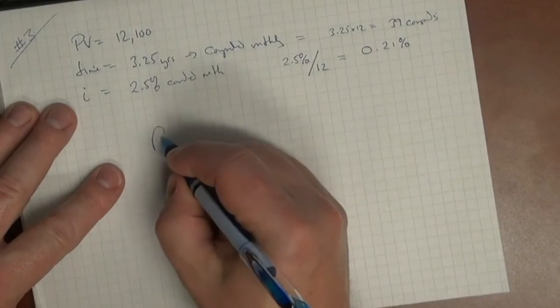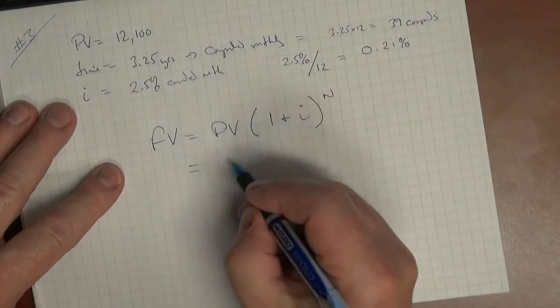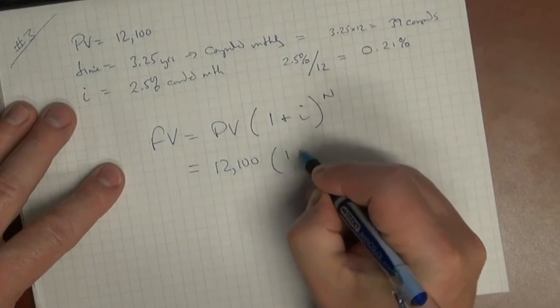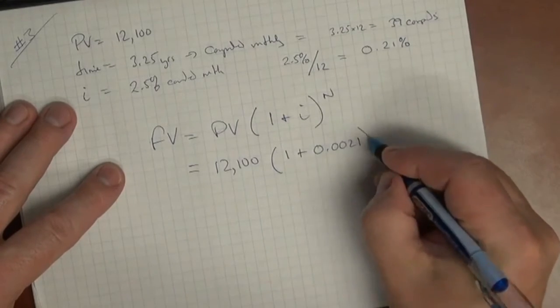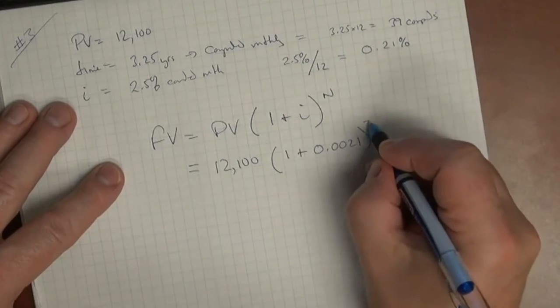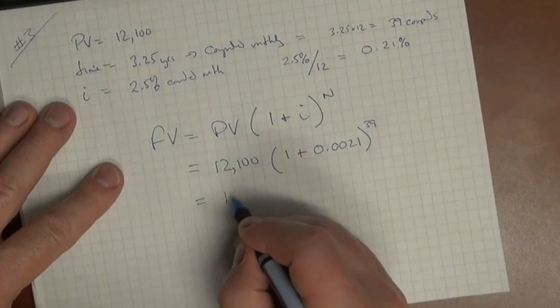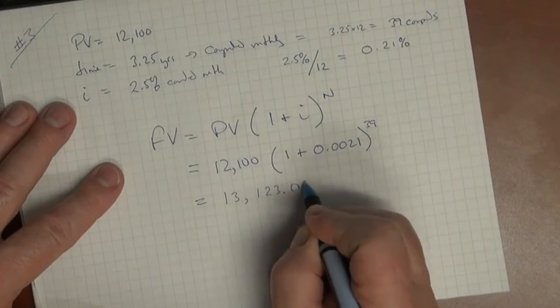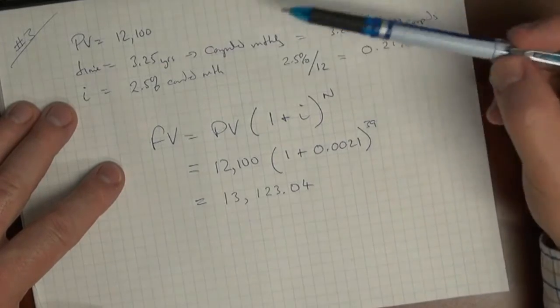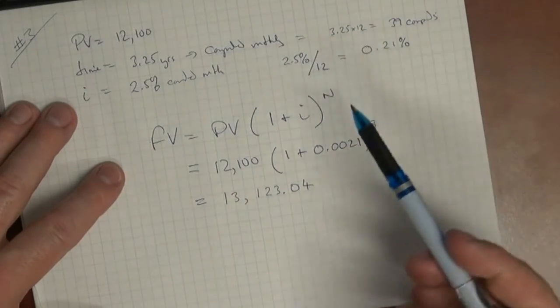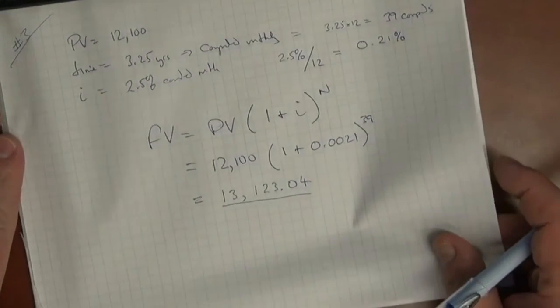So what we do is we'll throw that into the formula now. So the future value formula is PV 1 plus i to the n. So we put in the present value, 12,100, 1 plus i, and we have to convert that 0.21 to a decimal. So 0.0021 is what that would be in decimal terms, to the 39th power. We'll run that through our calculator, and we will get $13,123.04. In other words, what we're saying is that if we took $12,100, put it in the bank for three and a half years, compound it monthly, at 2.5% rate of interest, at the end of the period, we would have $13,123.04. So that's number three.